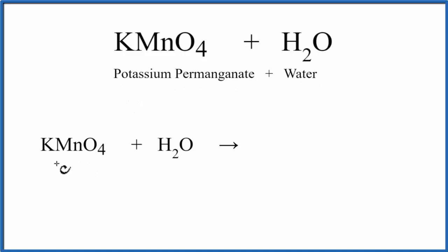So for KMnO4, we have potassium, that's a positive ion, and then we have MnO4, which is a polyatomic ion with a negative charge. It'll stay together. This MnO4 group, as a polyatomic ion, doesn't break apart easily.